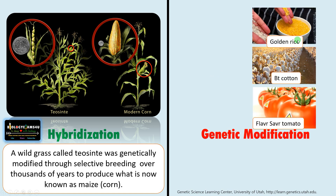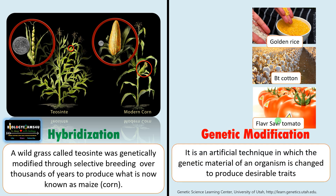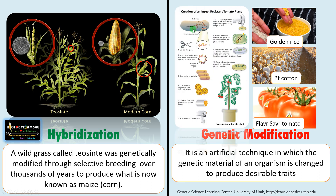Whereas in genetic modification, some examples are: golden rice, a rice rich in vitamin A; BT cotton, which is resistant to insects; and Flavr Savr tomato, a tomato with a long shelf life. All are genetically modified crops. It is a technique in which the genetic material of an organism is changed to produce desirable traits. Here we are introducing a gene that manifests desirable traits by different gene transfer methods, by means of recombinant DNA technology or genetic engineering. Or we may be silencing a gene — in the case of Flavr Savr tomato, the ripening gene is silenced by means of recombinant DNA technology.